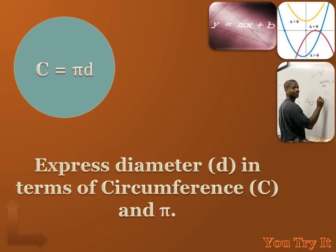You try this one. We've got a formula for the circumference of a circle. The circumference equals pi times the diameter. We'll express that in terms of d. Solve for the diameter. Hit your pause button, try the problem, and then hit your forward key to move on to my answer.